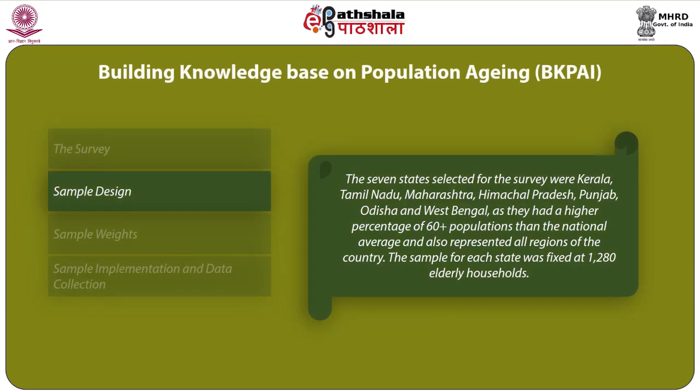The seven states selected for the survey were Kerala, Tamil Nadu, Maharashtra, Himachal Pradesh, Punjab, Odisha and West Bengal, as they had a higher percentage of 60 years and above population than the national average and also represented all regions of the country.